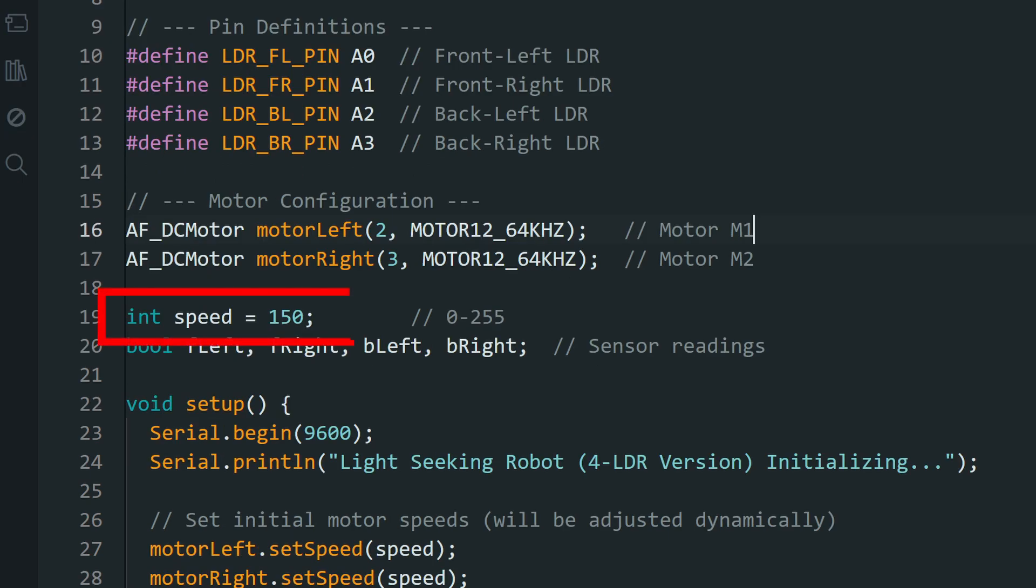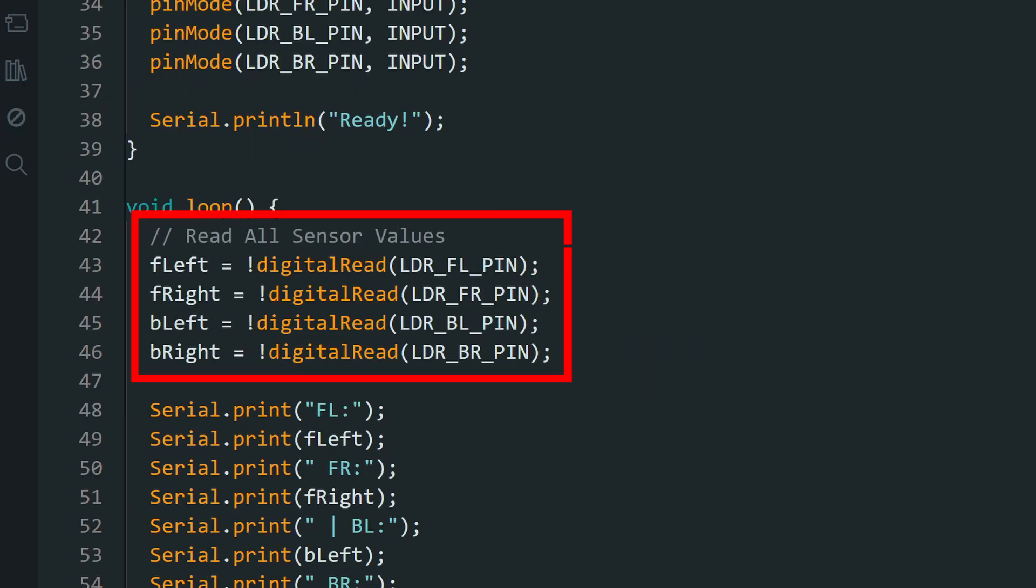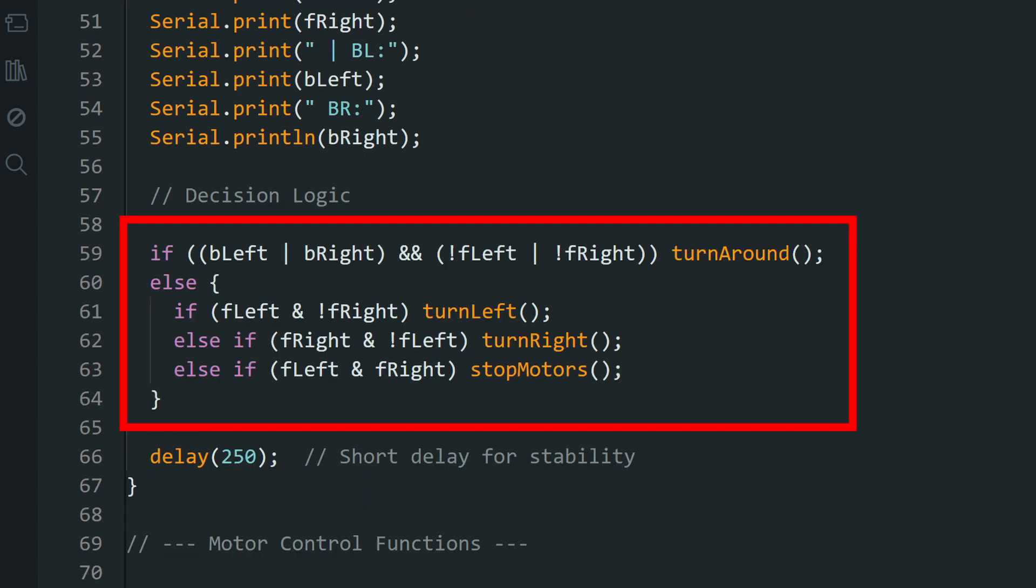In the code, you can adjust the speed of the robot using this value. Then, we read the LDRs and determine which is the brightest direction. Then turn the wheels to go in that direction. Then upload the code.